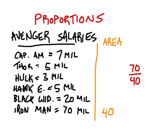Robert Downey Jr. or Iron Man made $70 million and took up 40 square inches of my graph. I turned that into a weird little fraction. Black Widow made $20 million, and the question is, how much of the area of the graph should she take up? So I'll use a variable to represent that. So I did $70 million on top, $20 million on top, 40 inches on bottom, unknown number of inches on bottom.